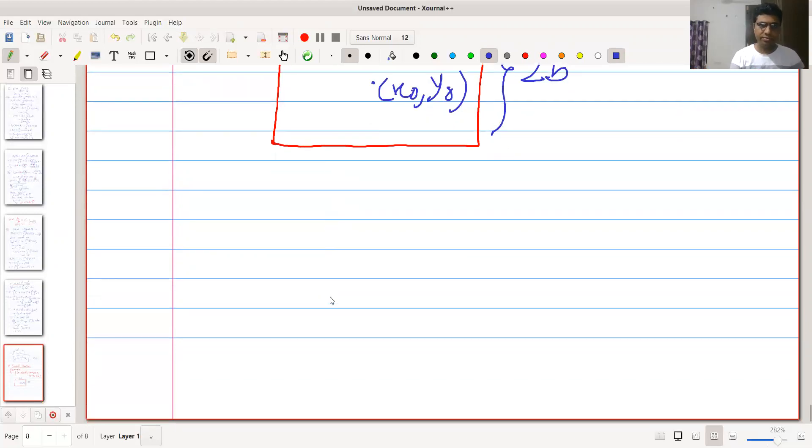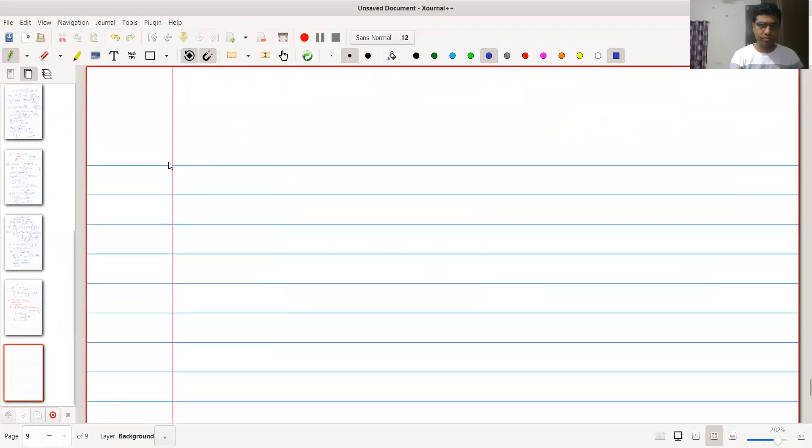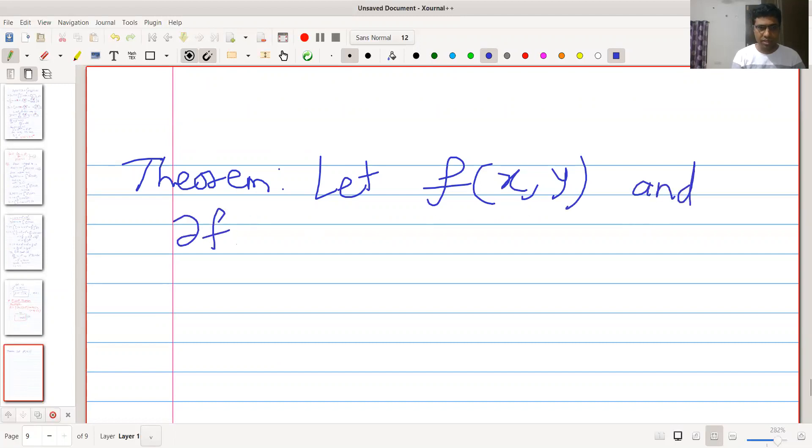Now let us see the result. Let f(x,y) and partial derivative of f with respect to y be continuous functions.